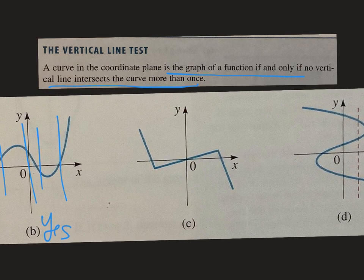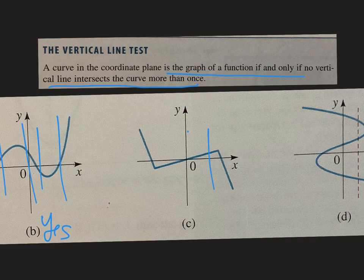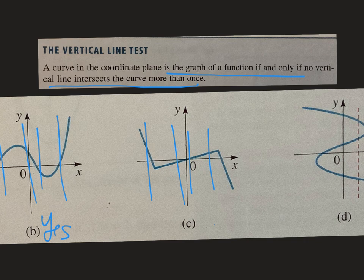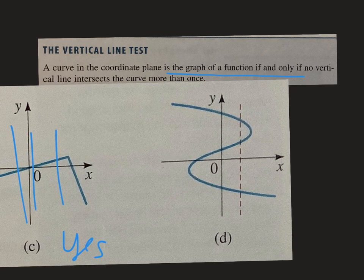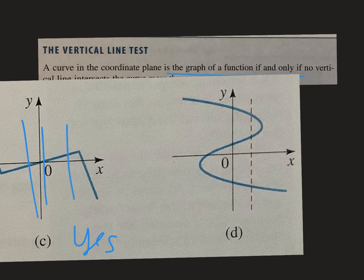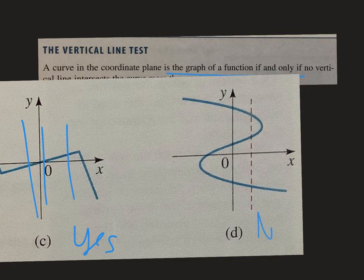This third one, vertical line again. If I draw a vertical line, I cannot hit it twice. I can just hit it one time. It just intersects it once. So I put yes. That's a function. And the last one over here already has a vertical line drawn. And it's hitting it like three times. So that's a definite no.